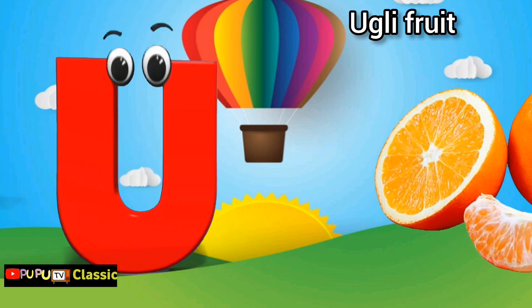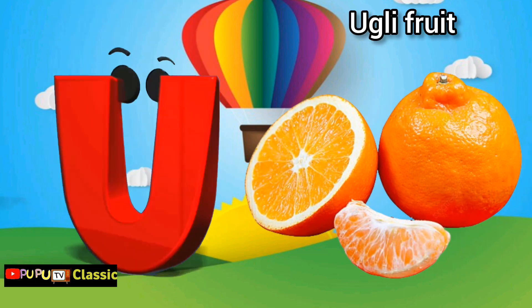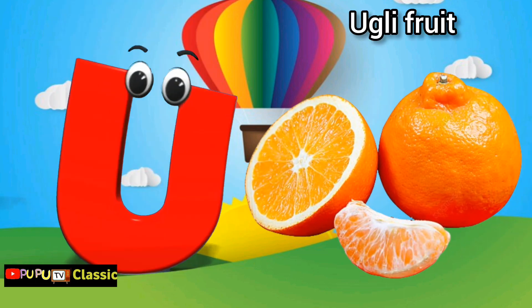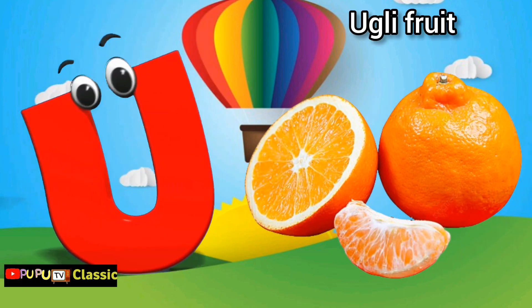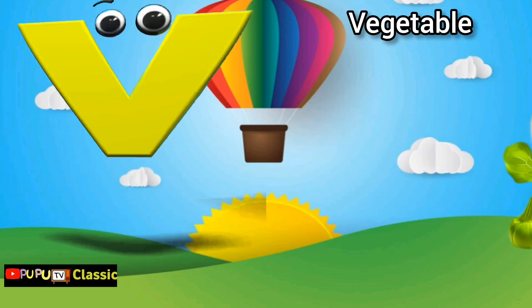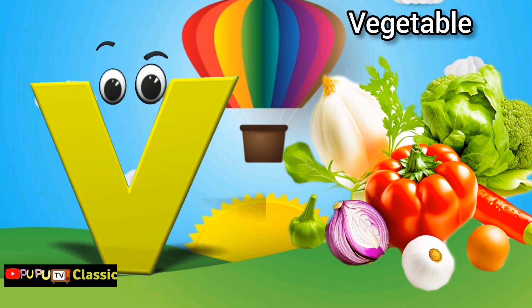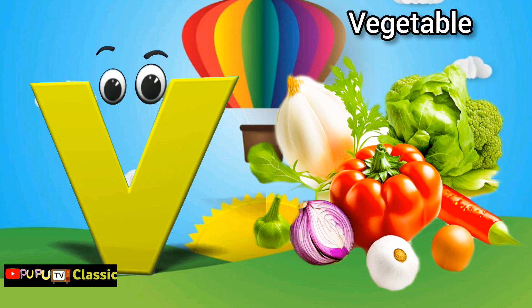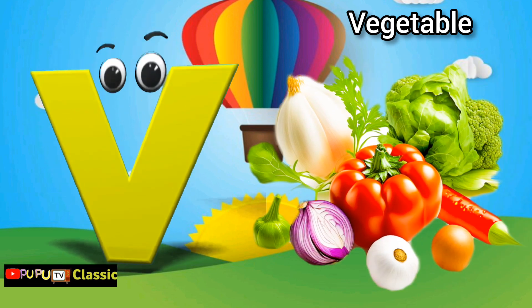U is for ugly fruit, u u ugly fruit. V is for vegetables, v v vegetables.